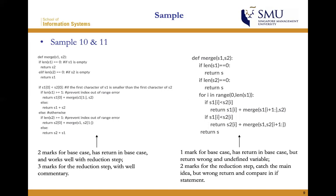For sample ten, I will give two marks for the base case — it has a return and works well with the reduction step — and three marks for the reduction step because it works with the base case. For sample eleven, I will give one mark for the base case because it has a return but returns a wrong and undefined variable s. Two marks for the reduction step because it catches the main idea — it has the if-else statement but returns and compares wrong in the if statement.